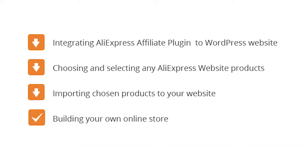AliExpress Affiliate Plugin can easily be integrated to any WordPress website in order to allow website owners to build their own online stores. The plugin makes it possible to search and select any of the products presented on AliExpress website, choosing from any category, keywords, price, and commission rate available.